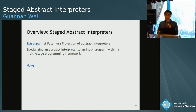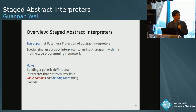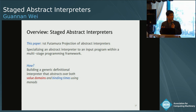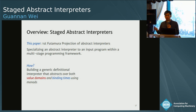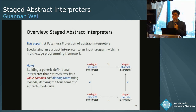The core idea is to build a very generic definitional interpreter that abstracts over both the value domains and the binding times. By abstracting over the value domains, we can control whether the interpreter works on concrete or abstract domains. By abstracting over the binding times, we can control whether the interpreter works as a real interpreter or as a compiler by generating code. We can then derive four different semantic artifacts from those two dimensions, and this derivation is modular and can be done in a relatively easy way.